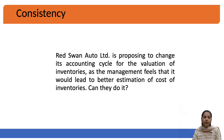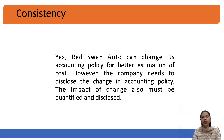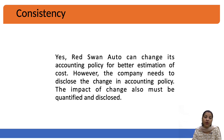Moving on to the next convention — consistency. Consistency means accounts will be prepared on a consistent basis; the methodologies for preparing accounts year on year remain the same. For example, Red Swan Auto Limited proposes to change its accounting policy for valuation of inventories, as management feels it would lead to better estimation of cost. They can change the accounting policy, but the company needs to disclose the change. The impact of this change must be quantified and disclosed to stakeholders, since financial results may vary due to the change in methodology. Ideally, a consistent method should be followed, and if there is a change, it should be reported.